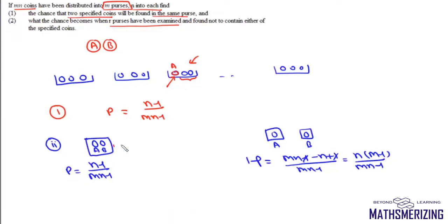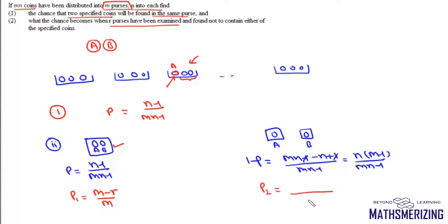When a and b are together and r purses have been examined, the probability that they occur in the remaining m-r purses is (m-r)/m, since we have m total choices and they are not in the first r. For Case 2, when they are in separate purses but also not in the first r purses, we use combinations: m choose 2 in the denominator and (m-r) choose 2 in the numerator.